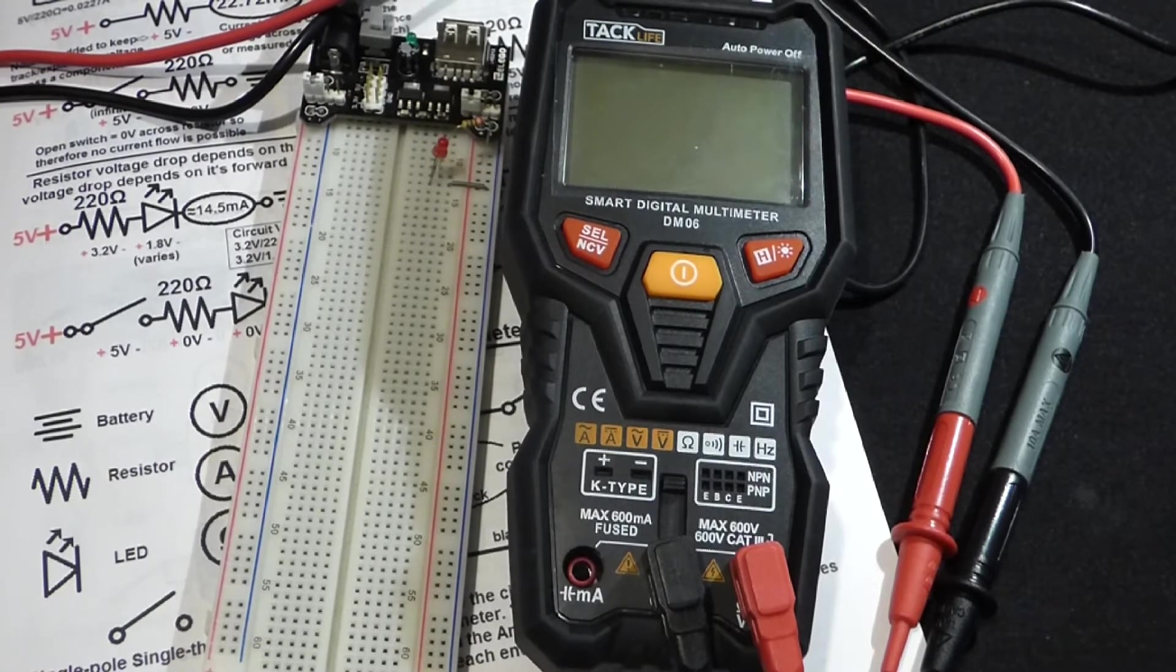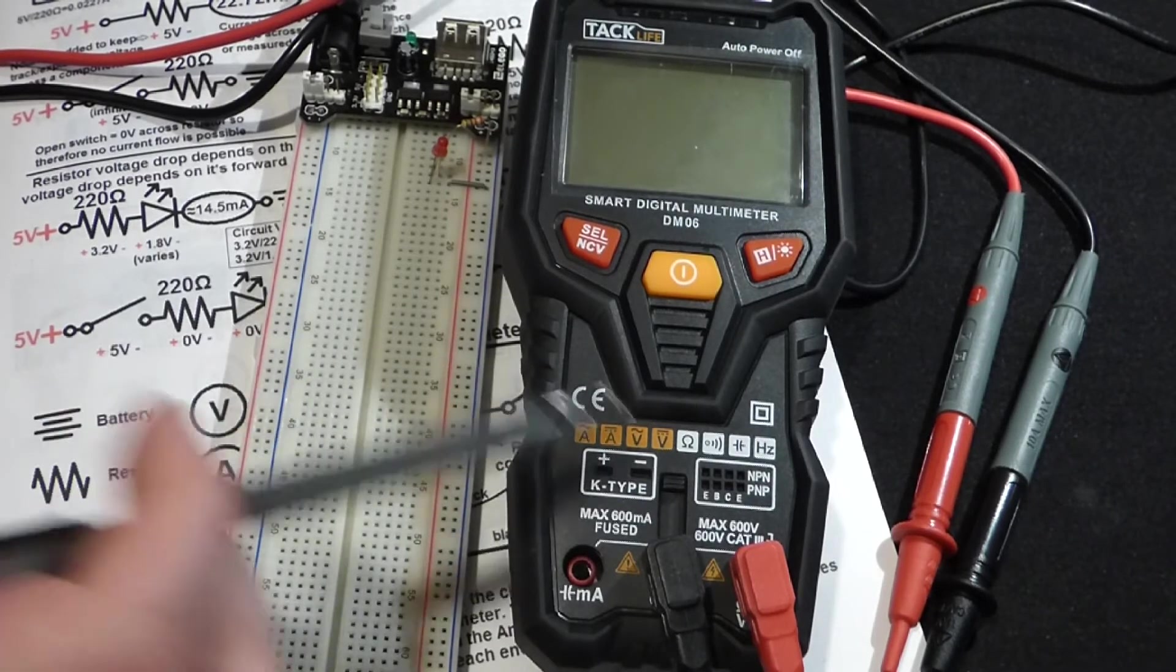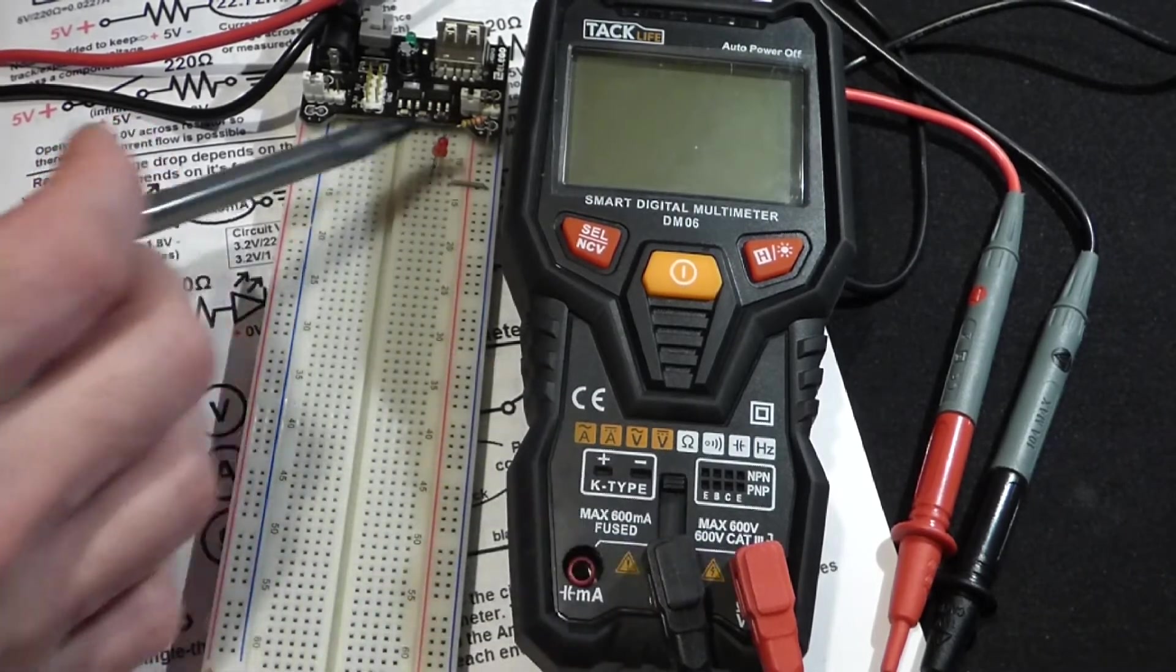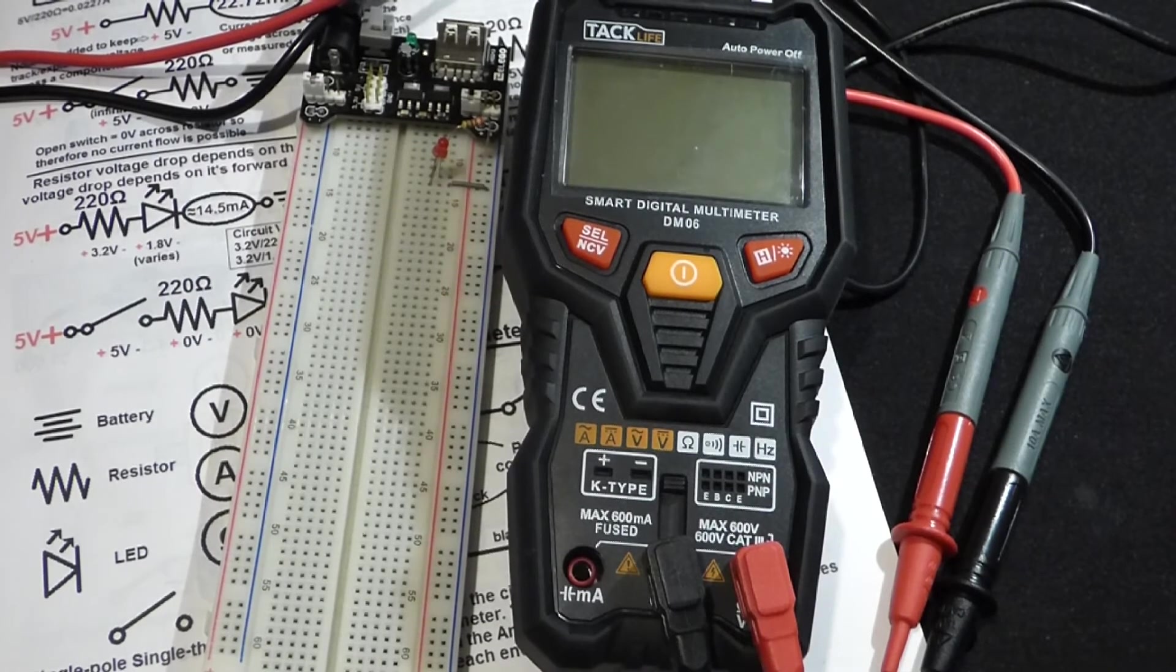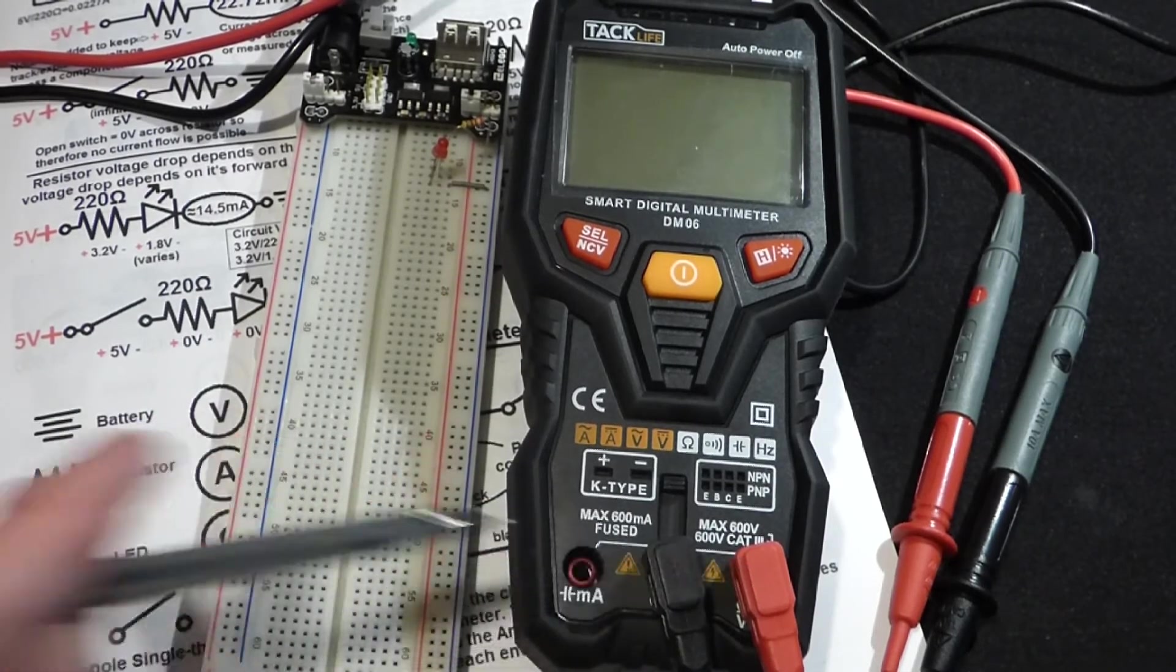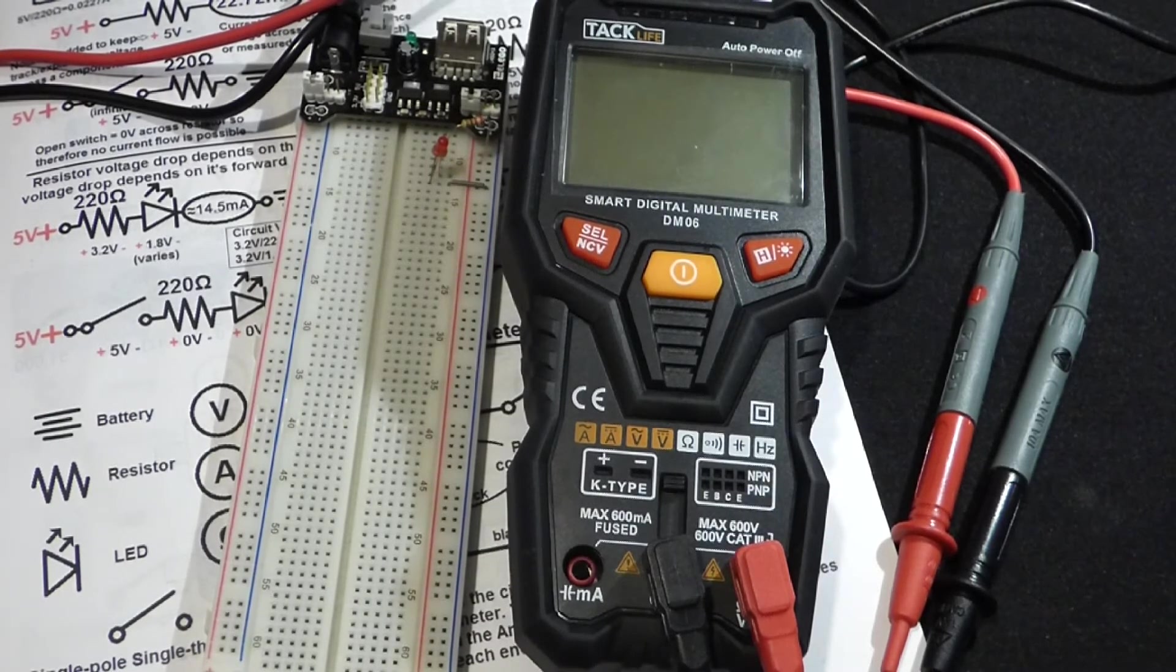Generally, people that are used to using multimeters and stuff, that's not a big selling point. But people brand new to electronics may really appreciate that it automatically takes those two measurements, the voltage and resistance, without having to make any adjustments. So it's up to you whether you like that or not.